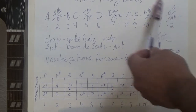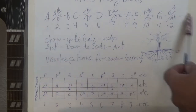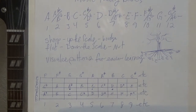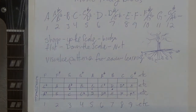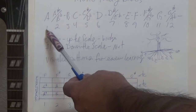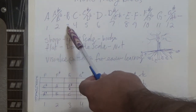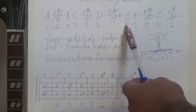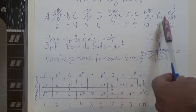And then it's going to go back to A. There's no H, I, J or anything like that. So you just got to think 12 notes — that's it, just 12. Now I've numbered them here: 1, 2, 3, 4, 5, 6, 7, 8, 9, 10, 11, 12.